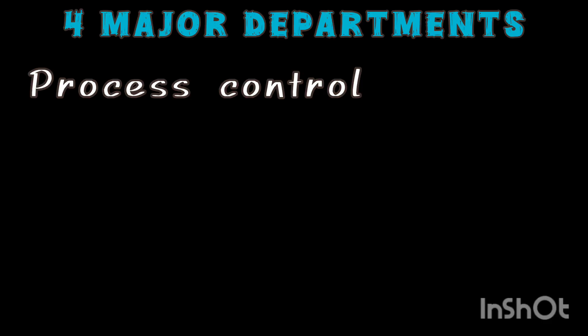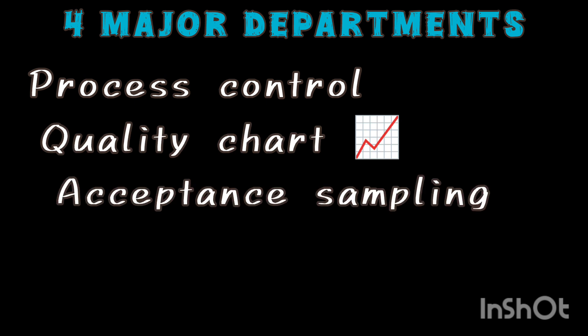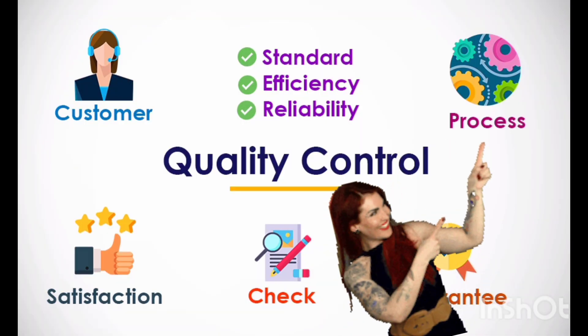If you have a major, you will have a major in four departments. This is the process control, quality chart, acceptance sampling, and product quality control.